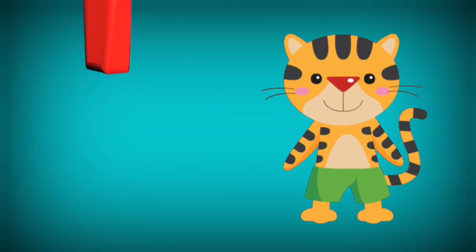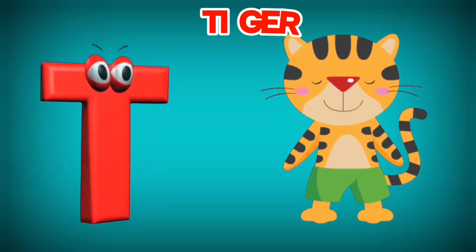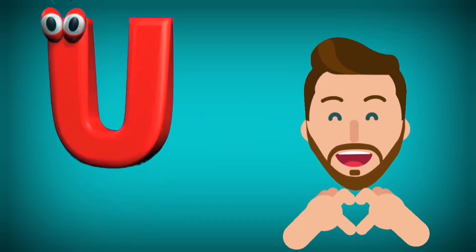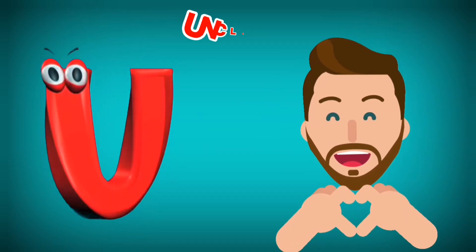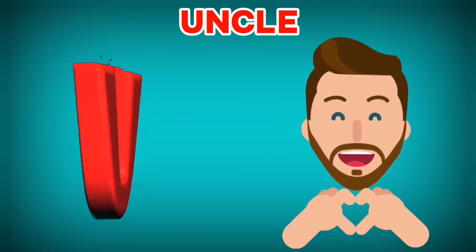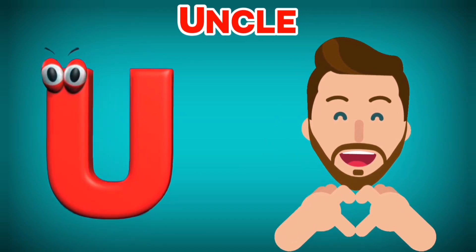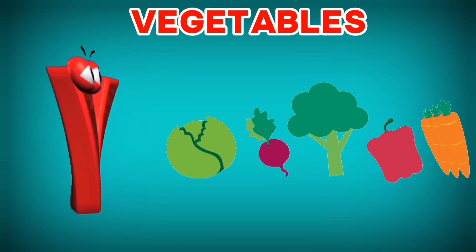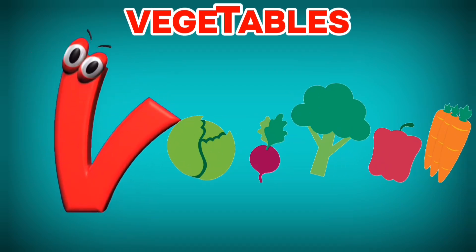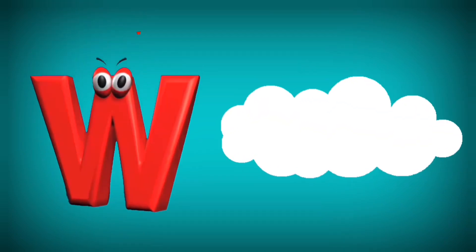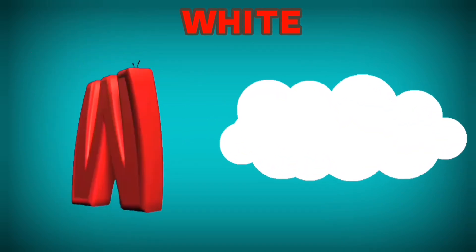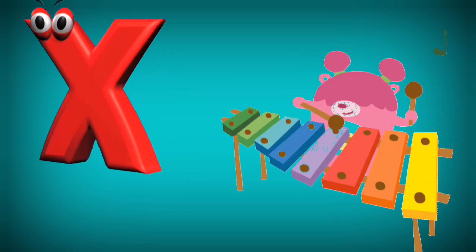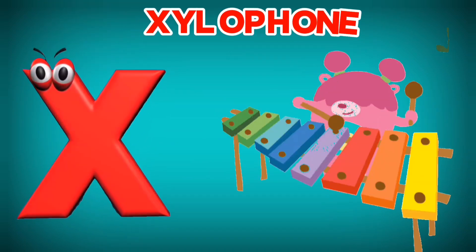T is for Tiger. T, T. Tiger. U is for Uncle. U, U. Uncle. V is for Vegetables. V, V. Vegetables. W is for White. W, W. White.